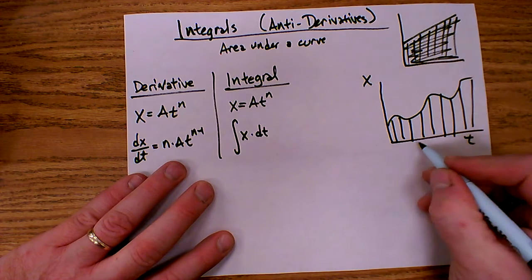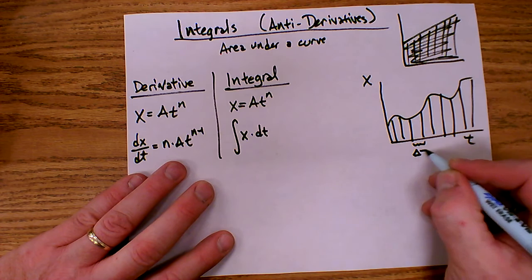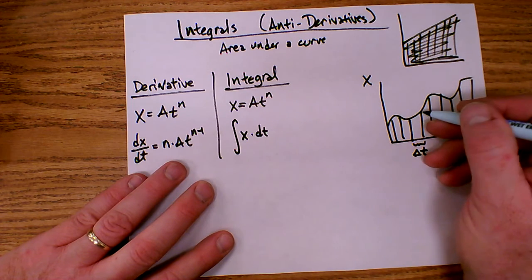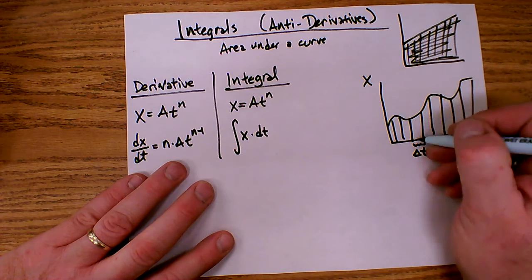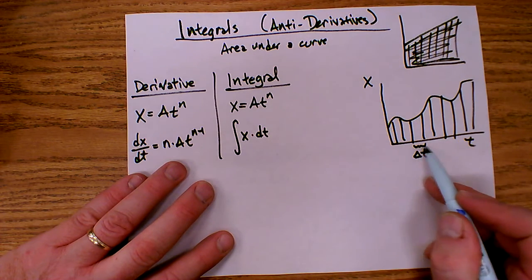So each of these little chunks has a base that's equal to delta t and a height equal to the value of the function x. So the area of this rectangle is the value of this x function times this little delta t.